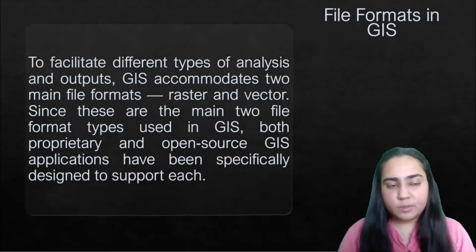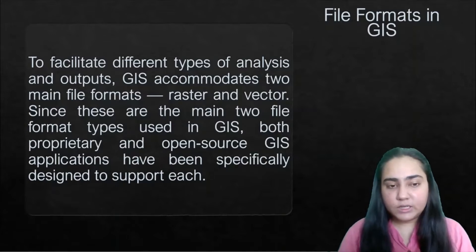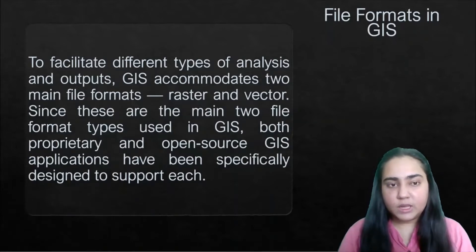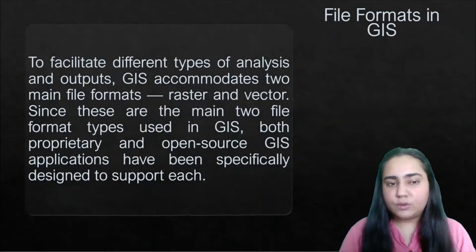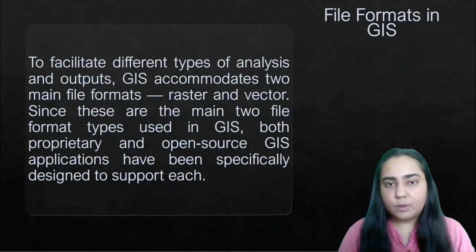To facilitate different types of analysis and outputs, GIS accommodates two main file formats: raster and vector. Since these are the two main file format types used in GIS, both proprietary and open source GIS applications have been specifically designed to support each. Whether you use an open source application or a paid proprietary GIS application, both would support the raster and vector file formats.